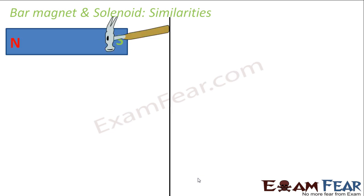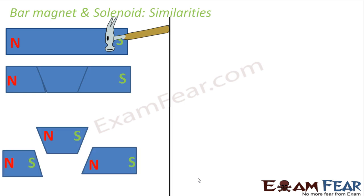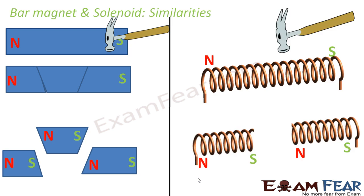If you have a bar magnet and try to divide it into pieces, all the pieces turn out to be a magnet in themselves — that means monopoles cannot be separated. You cannot separate the north pole from the south pole. Similarly, if you break a solenoid, you get multiple solenoids, though the magnetic properties become weaker. This is another similarity: you can never break a bar magnet or solenoid to get its constituents separately.